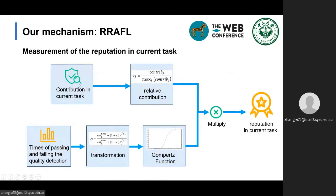Now we use contribution and the times of passing quality detection to measure the participant's reputation in the current task. Firstly we get the relative contribution. Secondly we perform a transformation on the times of passing and failing the quality detection, and the result is used as the input of the Gompertz function. The product of the Gompertz function output and the relative contribution is the reputation of this participant in the current task.